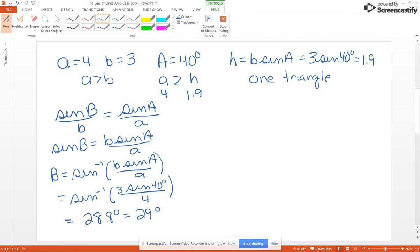We need to find angle C – that's our missing angle here – so take 180 minus 40 minus 29 degrees and that's going to give you 111 degrees.